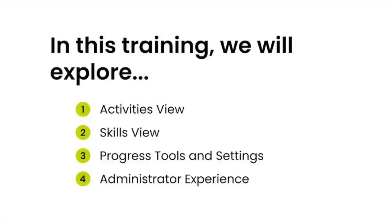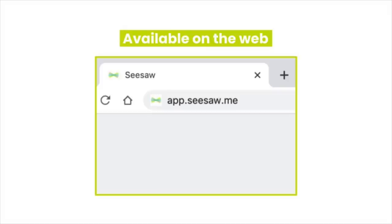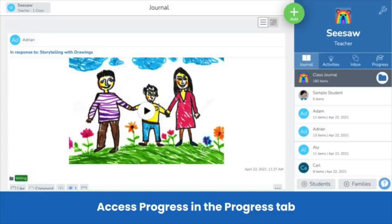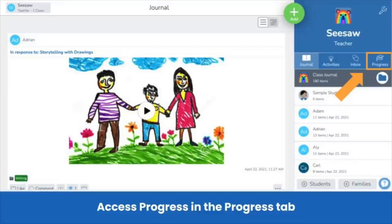In this training, we will explore the Progress Activities view, Skills view, Tools and Settings, and the Administrator experience. Log in to Seesaw on the web by visiting app.seesaw.me. Access Progress in the Progress tab — you can find it next to the Inbox tab on your Teacher Dashboard.